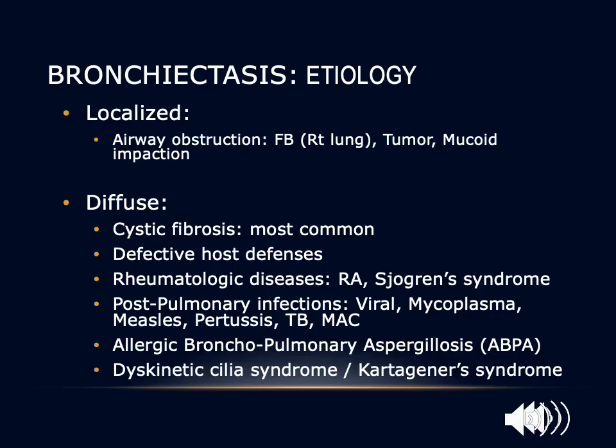These are precipitating infections, not the usual infections we see in bronchiectasis exacerbations. Other causes of diffuse bronchiectasis include allergic bronchopulmonary aspergillosis and primary ciliary dyskinesia or Kartagener syndrome. Bronchiectasis can also be localized, caused by airway obstruction from foreign body aspiration — usually involving the right lung due to anatomical reasons — an endobronchial tumor, or a mycoid infection causing chronic obstruction.